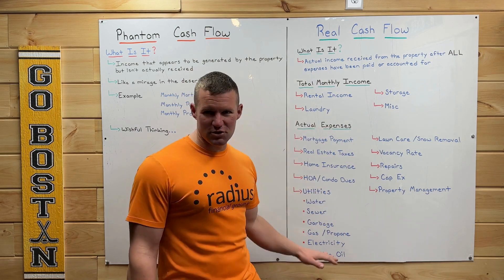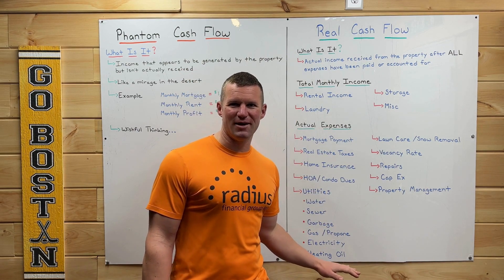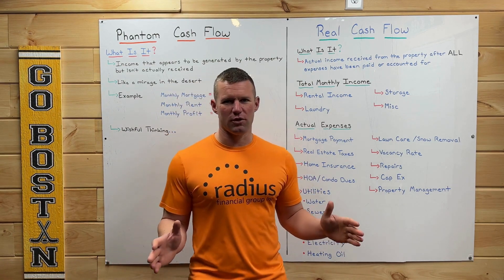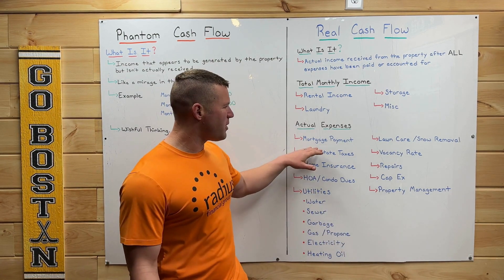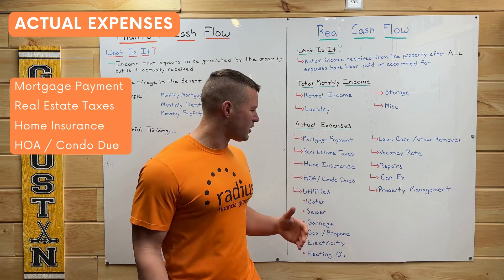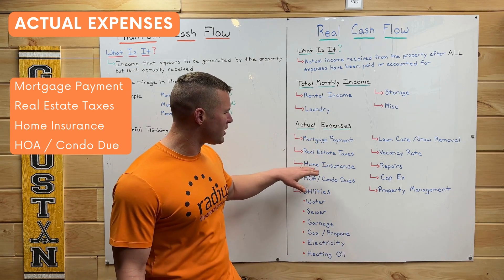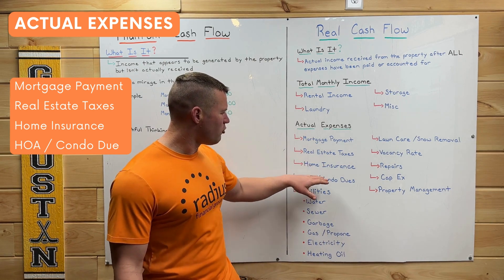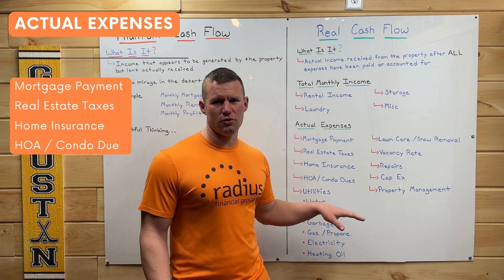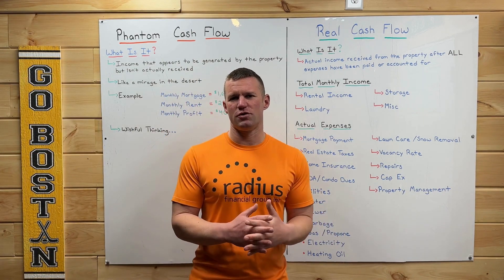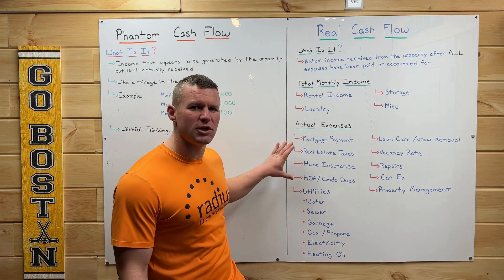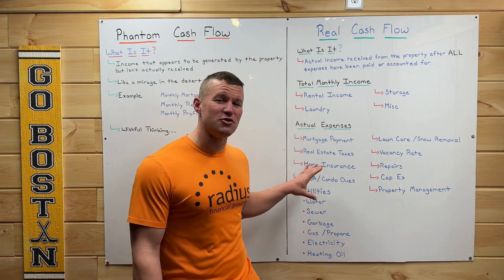What people really don't take into account are the actual expenses. The easy ones first: mortgage payment — principal and interest; real estate taxes; homeowners insurance; and HOA or condo dues. For the most part, everyone gets these expenses correct.